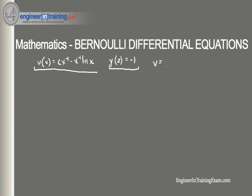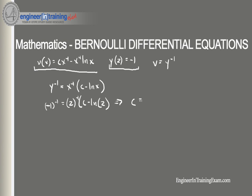Our substitution was v equals y to the negative 1, so substituting back: y to the negative 1 equals x to the 4th times (c minus natural log of x). Plugging in the initial condition — negative 1 to the negative 1 equals 2 to the 4th times (c minus natural log of 2) — we find that c equals natural log of 2 minus 1 over 16. That's our constant of integration.